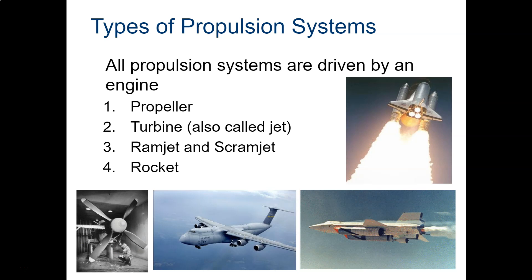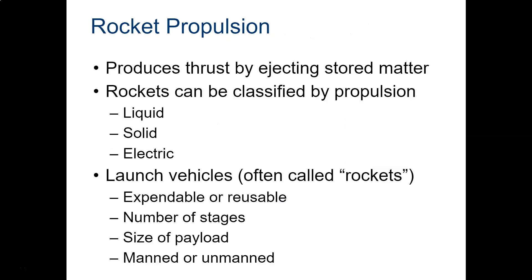So the fourth thing, the last thing to really cover on the topic of propulsion, are rockets. A rocket produces thrust by ejecting stored matter and also a change in pressure. They can be classified by liquid, solid, or electric—mostly liquid and solid is what you're familiar with. Electric engines are used in the vacuum of space.